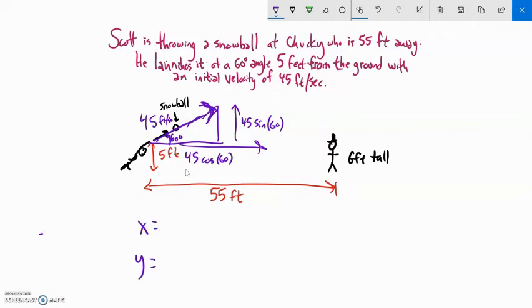The parametric equation: the x part is just that horizontal movement, so that's 45 times cosine of 60 degrees times time. It'll keep moving in that direction at that speed.